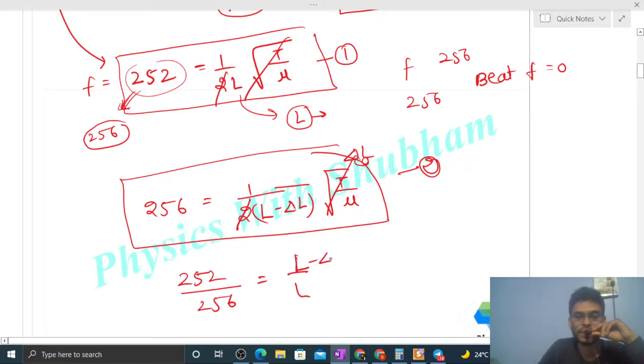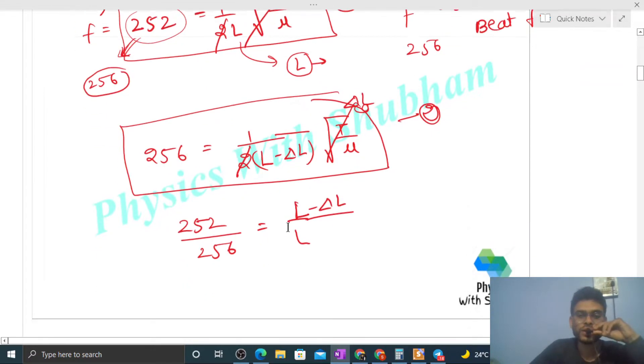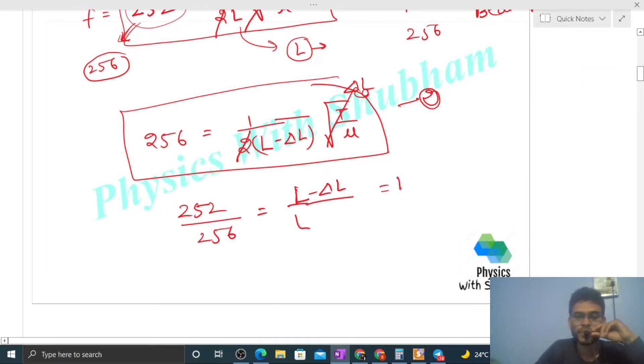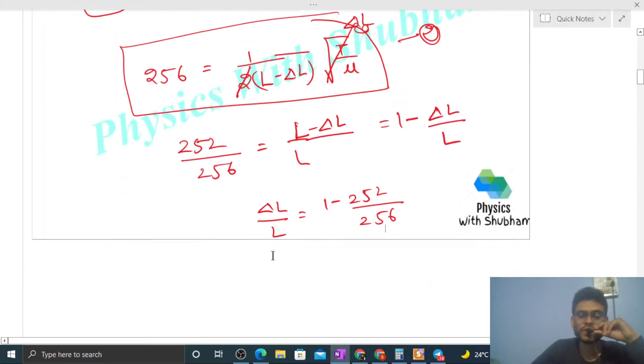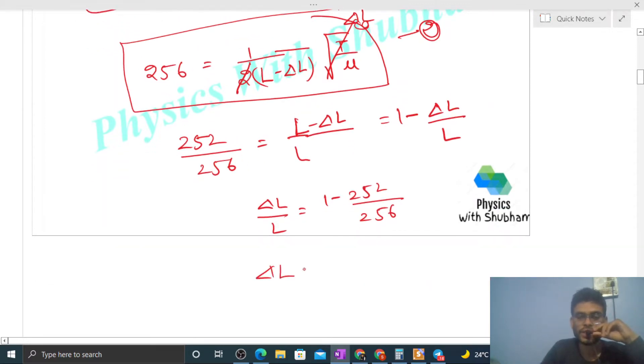This is nothing but 1 minus ΔL/L. So from here, ΔL/L equals 1 minus 252/256. And you know the value of L, so ΔL will be L times this: L value is 0.25, times 1 minus 252 divided by 256.